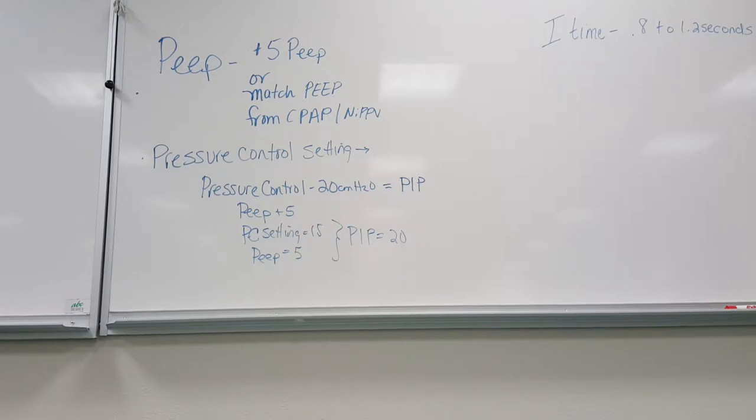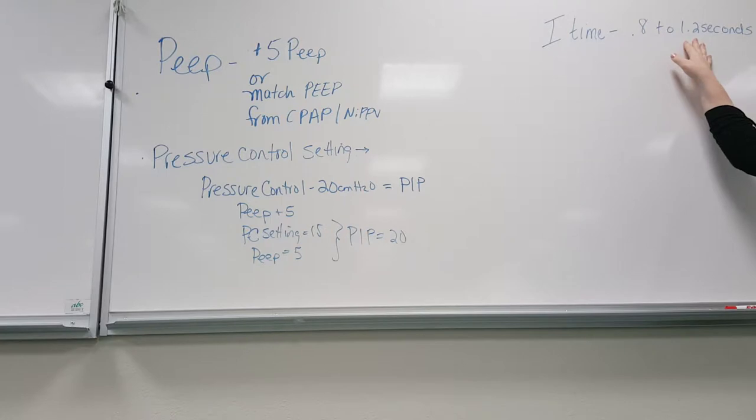So depending on which vent you're at, there's always going to be a way to adjust it — it just might not be a dial that says seconds. This is the standard starting I-time; you can always go with 1.0 — it's easy.